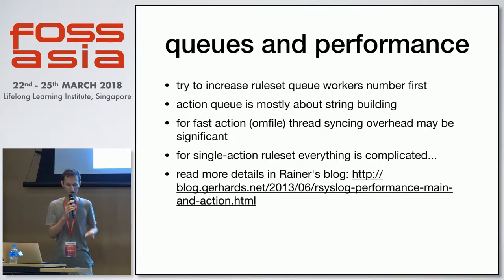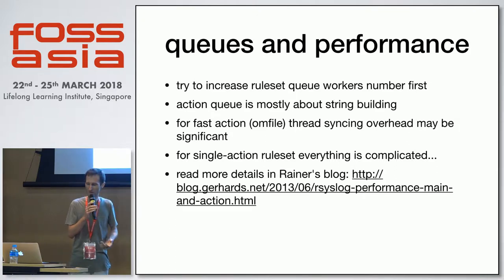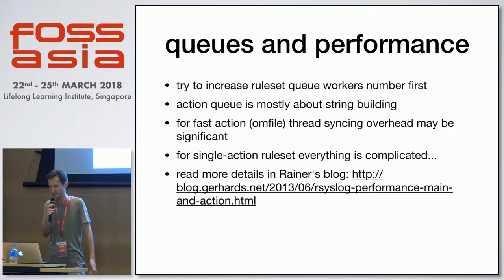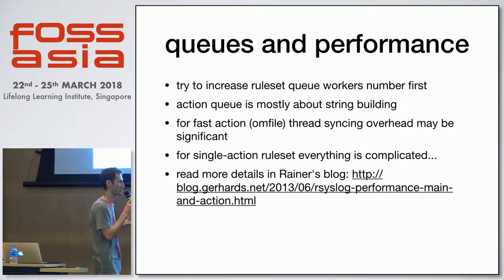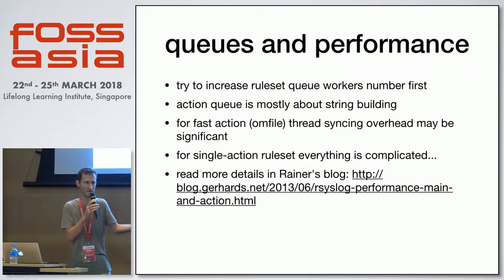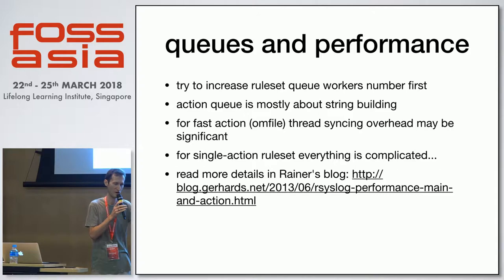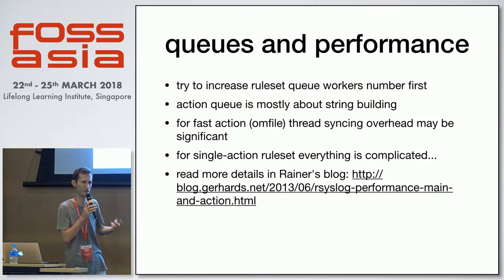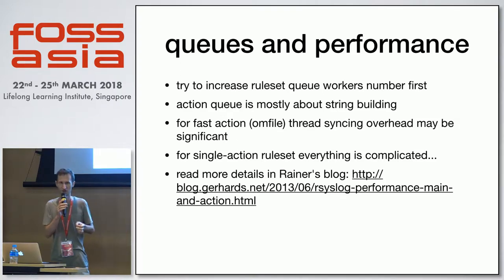If speed is still not enough, you can try to increase the number of action queue workers. But action processing is mostly about string building — templating: we get a message, do some changes, produce a string, and put it to output. There's not so much benefit unless you have heavy string processing. Usually two workers is enough; only in rare cases do you need more.